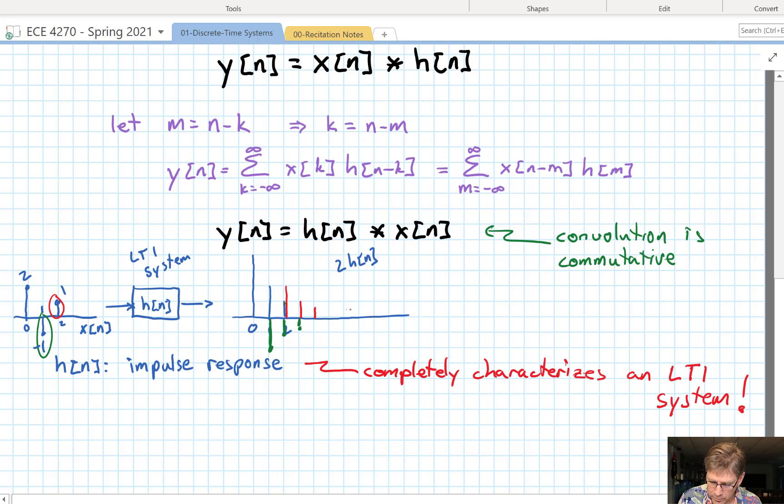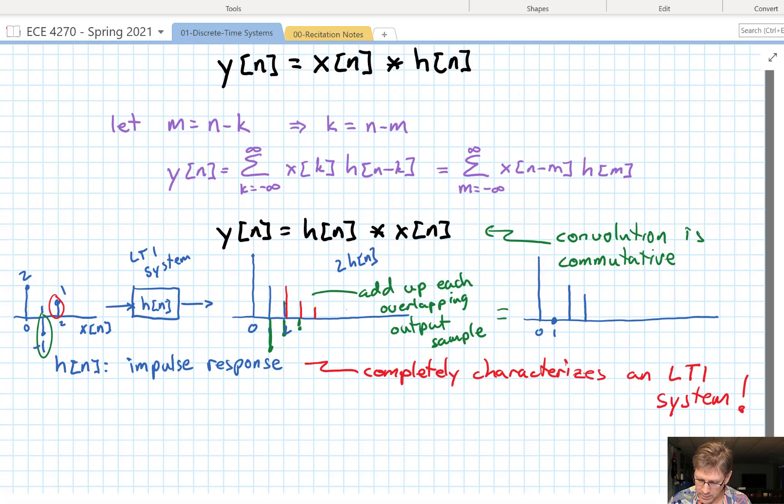Now the total output is going to be the sum of all of those. So, we're going to add up each overlapping output sample. And we would get something here that has this value of 4 as our initial output. The next two cancel. So that's going to be 0 at time 1. Then we have a 1, a minus 1, and a plus 2. So that will be a plus 2. Then we have a 1 and a minus 1 half. And finally, we have 1 half. So this would be our output.